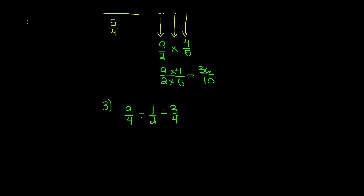The first fraction stays the same, so I'm going to bring it straight down and write nine over four. Then the division symbol changes — I'm going to change it into a multiplication symbol. The next step is to flip the second fraction, so one over two becomes two over one.